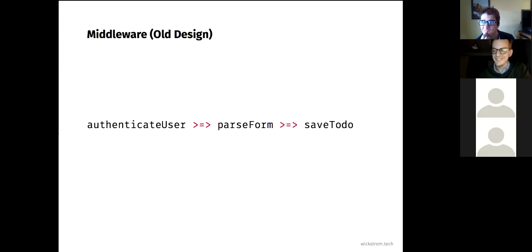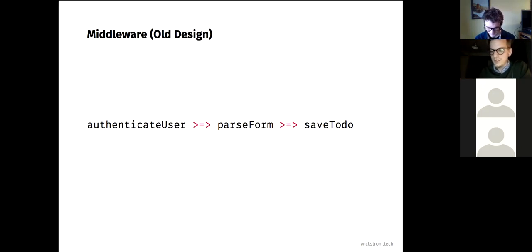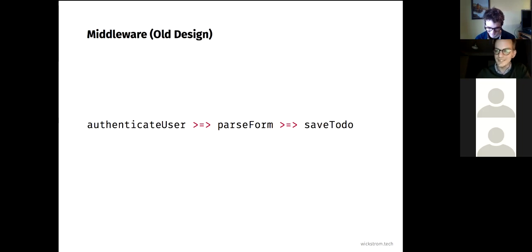This seemed all good and safe until one week before a conference — knowing Edwin Brady would be in the audience — I discovered a big hole in my design. So I messaged Gary Burgess in a panic, saying I'm coming to your conference to speak about this and it's broken. He quickly put together an indexed monads library and said use this and you'll be fine. So I redesigned this with indexed monads, which turned out a bit differently.